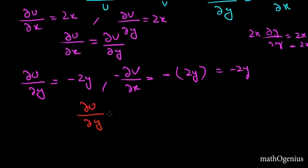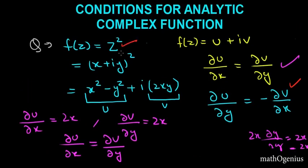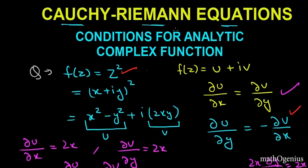From here we also conclude that ∂u/∂y equals minus ∂v/∂x. So both conditions are satisfied. Hence, this function is an analytic function, and we have used Cauchy-Riemann equations for that.